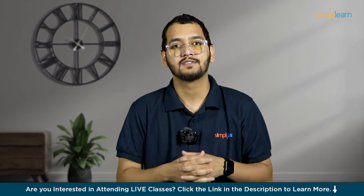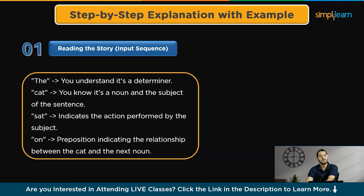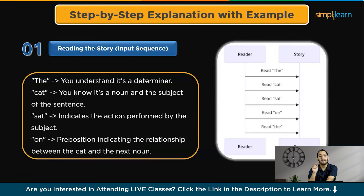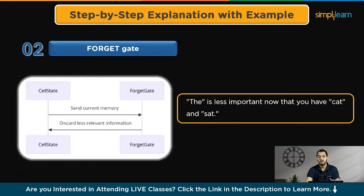Step one: reading the story — the input sequence. As you read each word in the sentence, you process it and store relevant information. For example: 'the' — you understand it's a determiner; 'cat' — you know it's a noun and the subject of the sentence; 'sat' — indicates the action performed by the subject; 'on' — a preposition indicating the relationship between the cat and the next noun. Step two: the forget gate. As you move through the sentence, you might decide that some details are no longer important. For instance, knowing 'the' is less important once you have 'cat' and 'sat.' The forget gate helps discard this less important information.